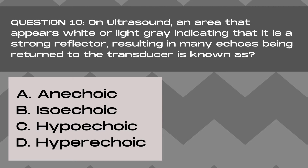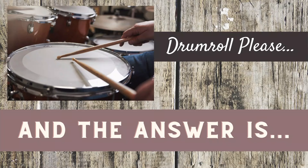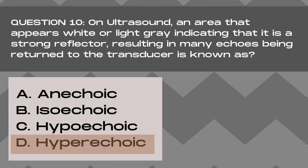Question 10. On ultrasound, an area that appears white or light gray, indicating it is a strong reflector, resulting in many echoes being returned to the transducer, is known as: A. Anechoic, B. Isoechoic, C. Hypoechoic, or D. Hyperechoic. And the answer is D. Hyperechoic. Hyperechoic areas are light gray or white on ultrasound.